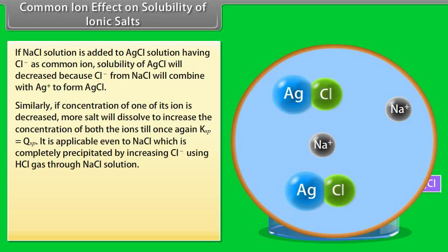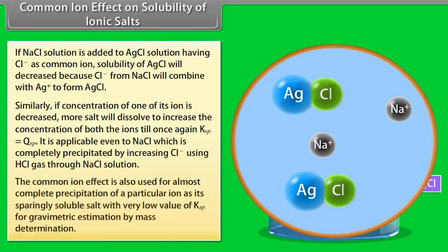This is applicable even to NaCl, which can be completely precipitated by increasing Cl⁻ using HCl gas through NaCl solution. The common ion effect is also used for almost complete precipitation of a particular ion as its sparingly soluble salt with a very low value of Ksp, for gravimetric estimation by mass determination.